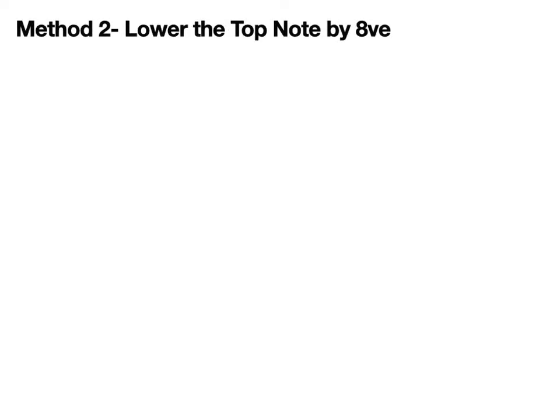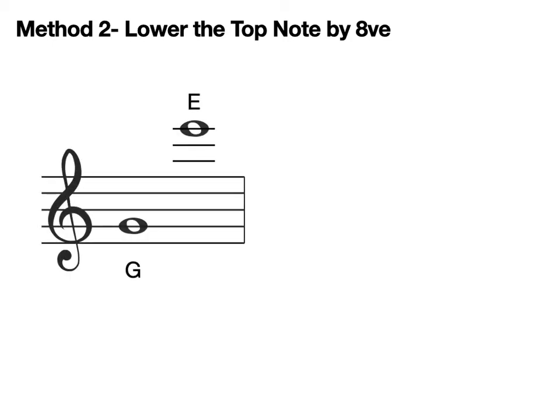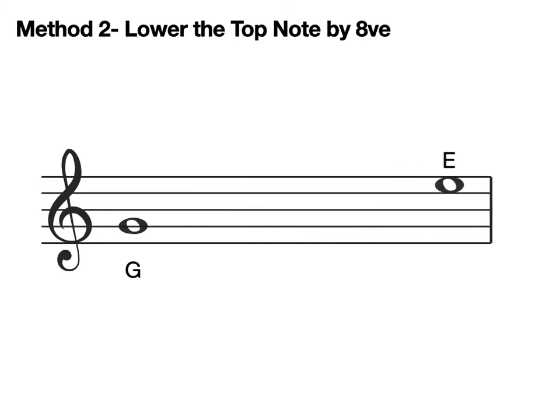But we can also use method two. Method two involves us lowering the top note by an octave. So let's write out that same interval. And bring that high E down an octave to E on the stave.